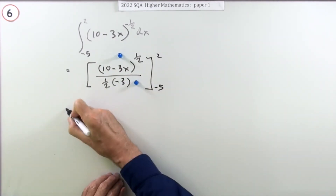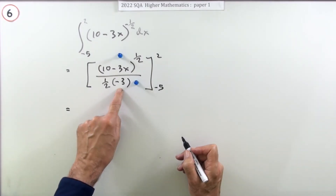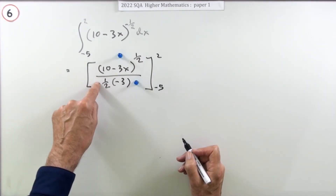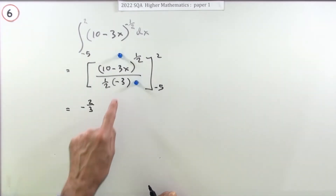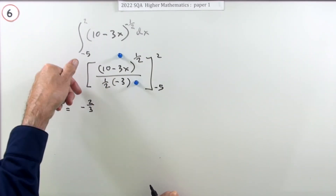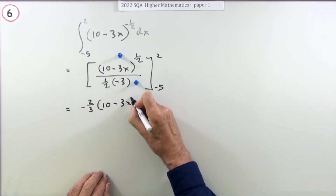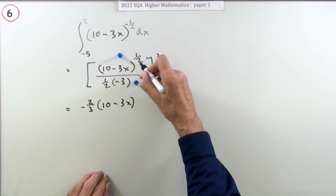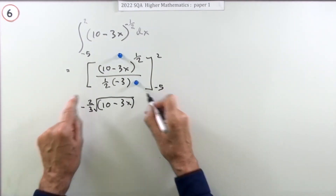Evaluate from negative 5 to 2. First, tidy this up — that's a negative 3 over 2 underneath, so that becomes negative 2 thirds when you multiply by the reciprocal. I'll rewrite that half as a square root just to make it quite clear, because it's easier to see with the square root sign.